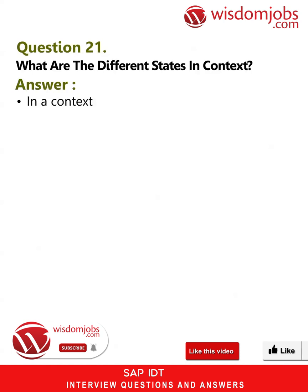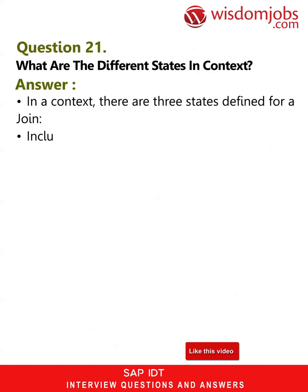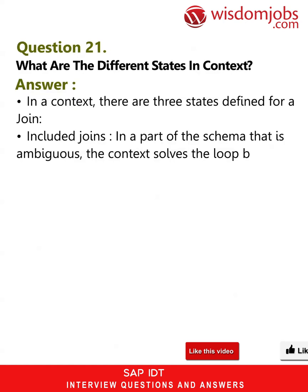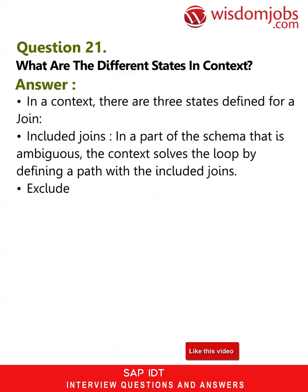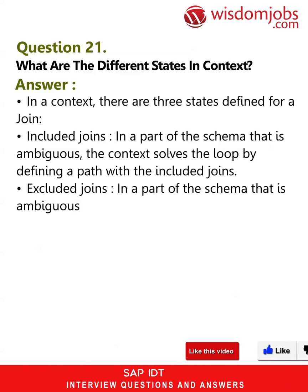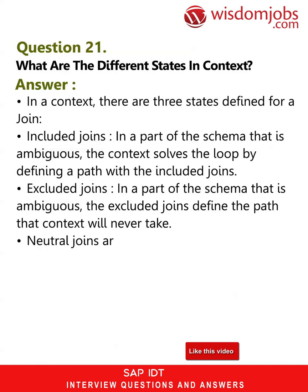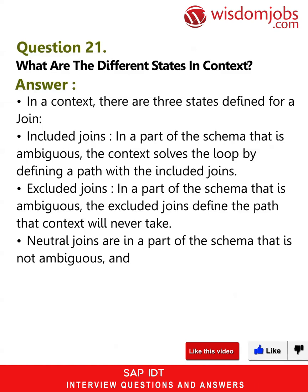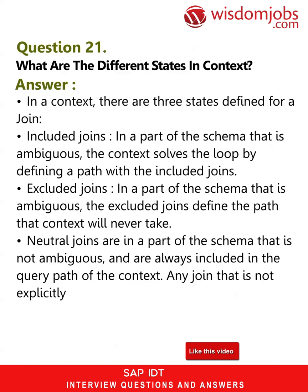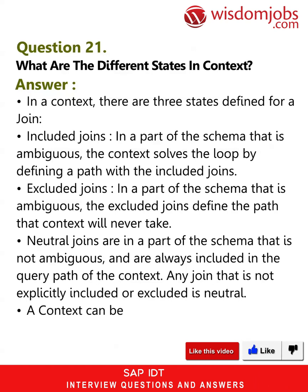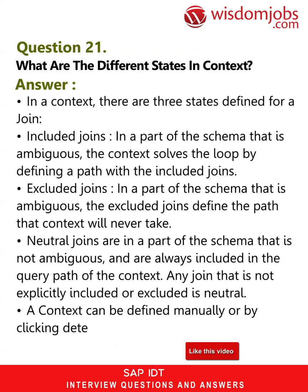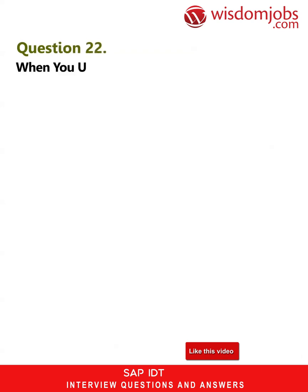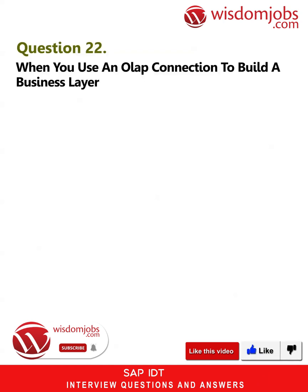Question 21: What are the different states in a context? Answer: In a context there are three states defined for a join. Included joins are in a part of the schema that is ambiguous; the context solves the loop by defining a path with the included joins. Excluded joins are in a part of the schema that is ambiguous; the excluded joins define the part the context will never take. Neutral joins are in a part of the schema that is not ambiguous and are always included in the query. Any join not explicitly included or excluded is neutral. A context can be defined manually or by clicking the Detect Context option.